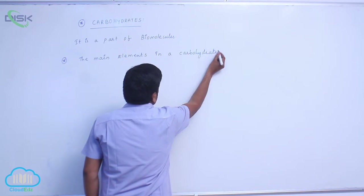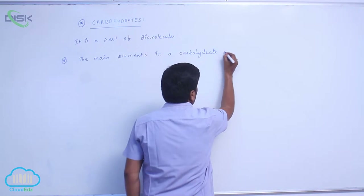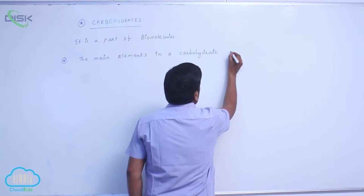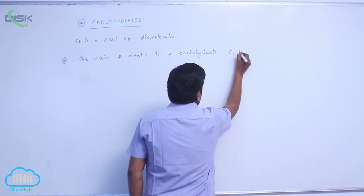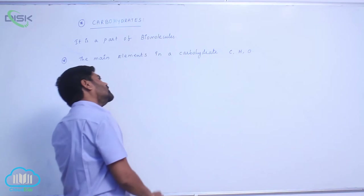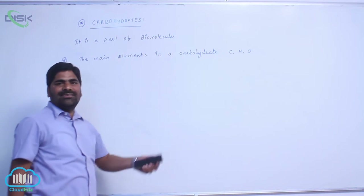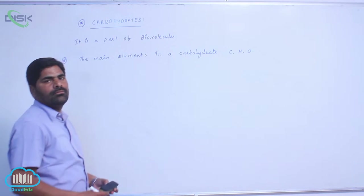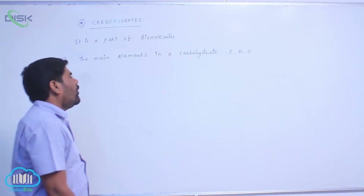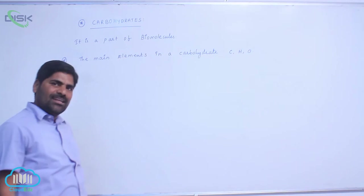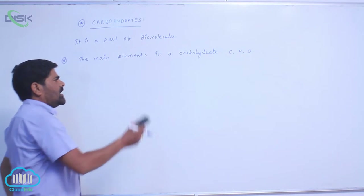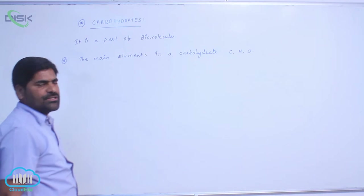The main elements in a carbohydrate are carbon, hydrogen, and oxygen. Carbon, hydrogen, and oxygen containing compounds are known as carbohydrates generally. So carbohydrates mainly contain carbon, hydrogen, and oxygen.